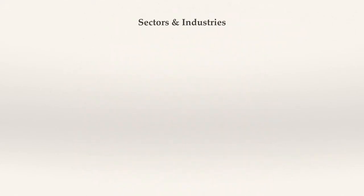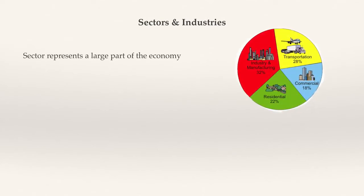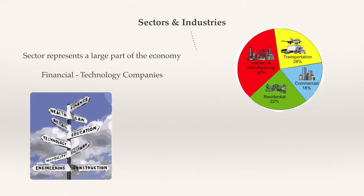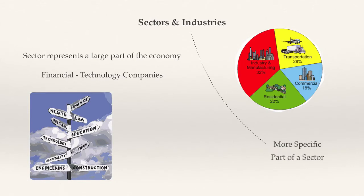Companies are always divided into sectors and industries. A sector represents a large part of the economy — these can range from financial to technology companies. Industries, on the other hand, are much more specific and are part of a sector. For example, banks are an industry within the financial sector. The existence of sectors and industries is important to know as they frequently all move together in terms of stock price.